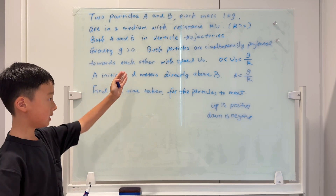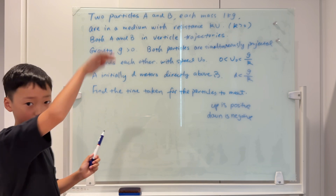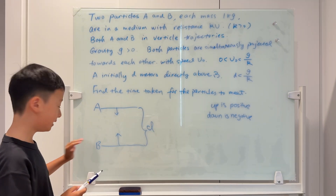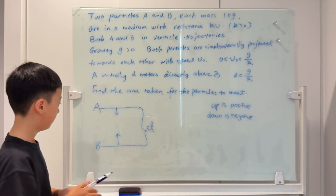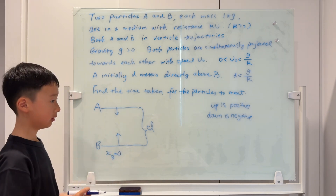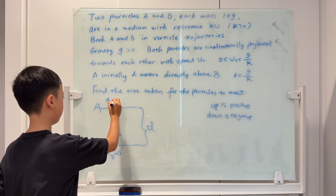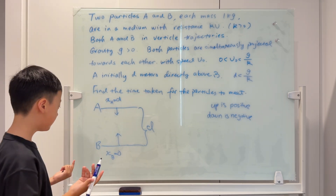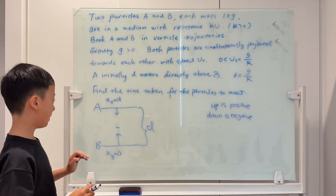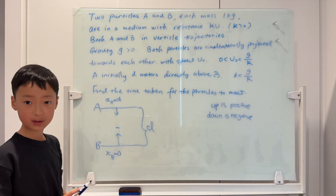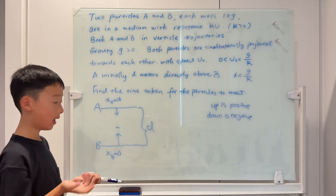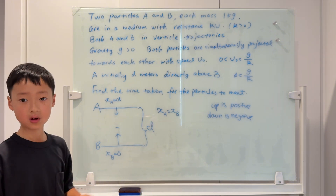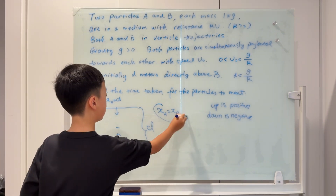We can see that A is initially D meters directly above B. With just this information, we can already draw the diagram. Initially, B's displacement is 0, and XA will be D. The question asks for the time for the particles to meet, so at the meeting point, the displacement of A equals the displacement of B. This is one of our key points to solving the question.